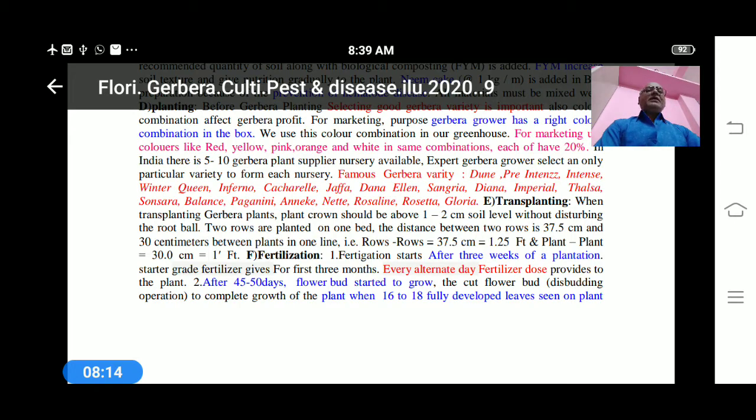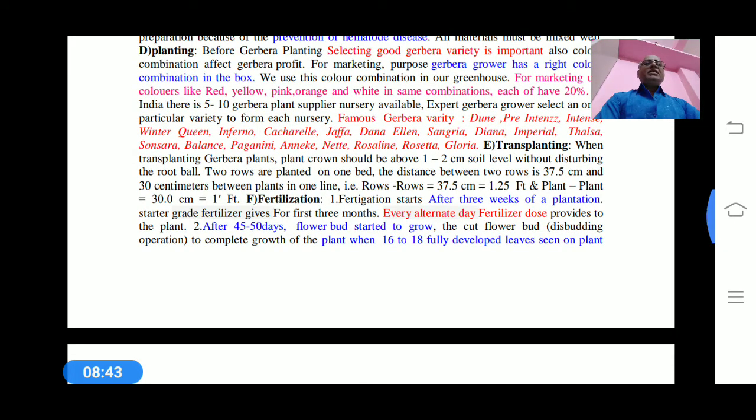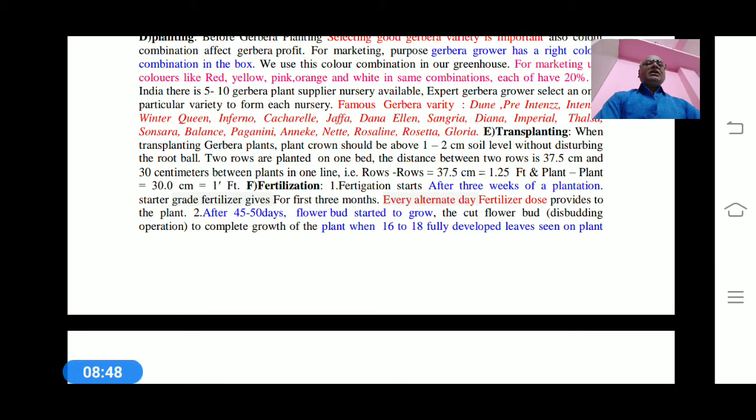These plants are planted in the greenhouse or polyhouse. In transplanting gerbera plants, the plant crown should be above one to two centimeters soil level without disturbing any root balls at the base. Two rows distance must be maintained as already discussed: 1.25 feet between rows and one foot plant to plant.